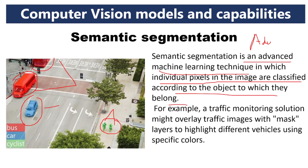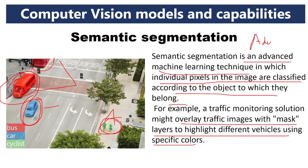A traffic monitoring solution might overlay traffic images with a mask. Mask means the objects are highlighted — in red color for buses, blue color for cars, and green color for cycles. That is known as masking layers, used to highlight different vehicles using specific colors.